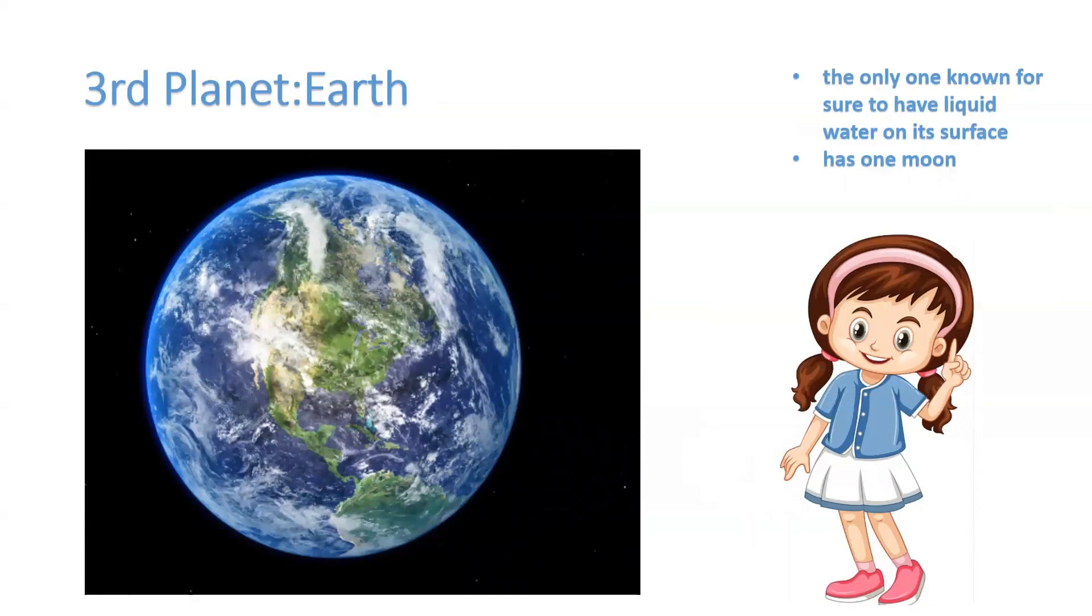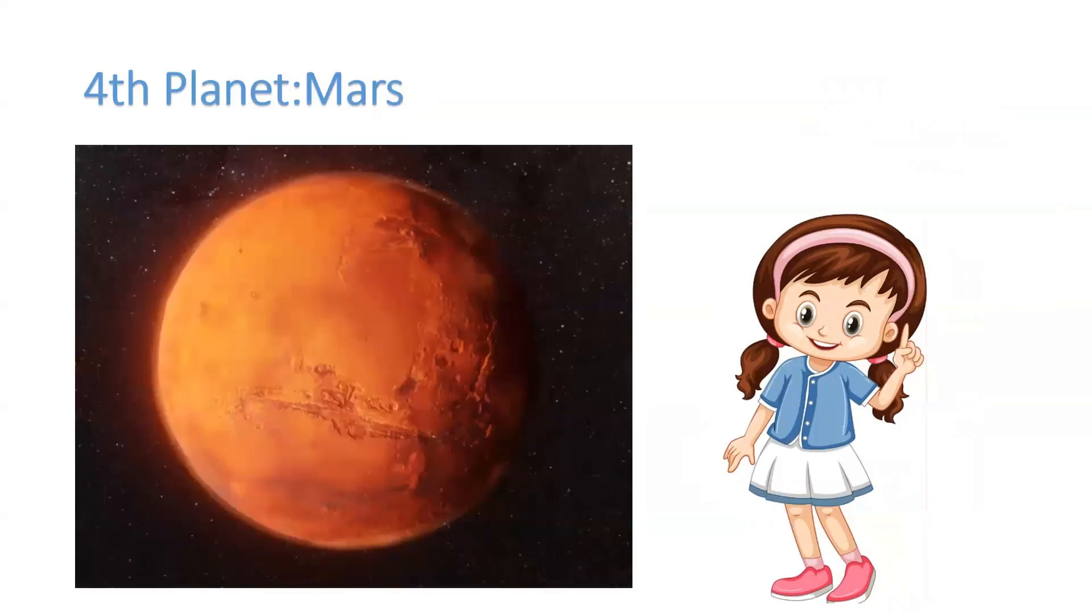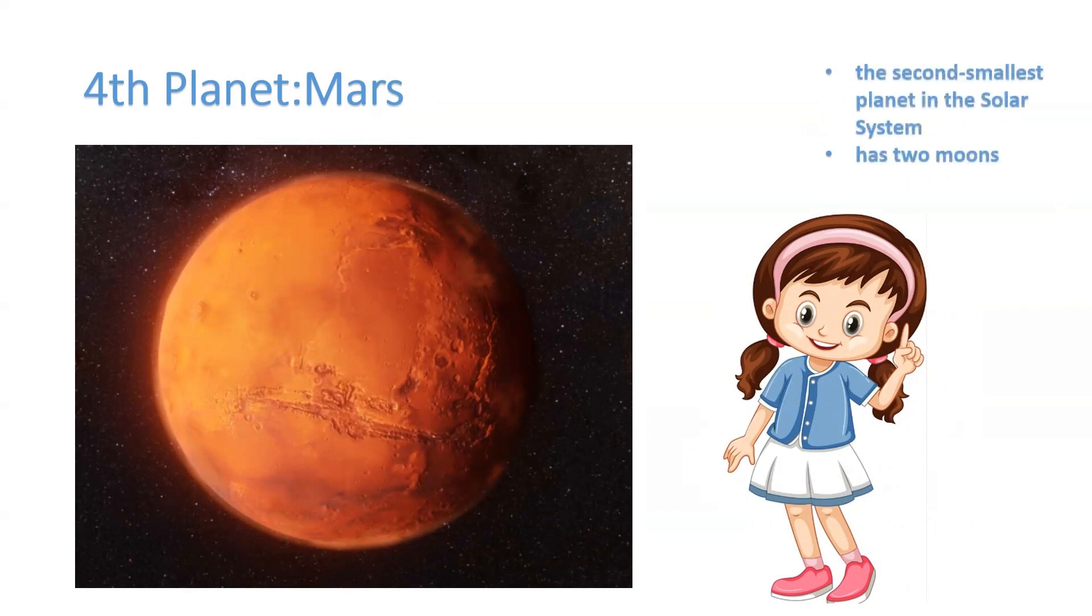Let's move to the next planet, planet Mars. Here's a picture of Mars. Mars is also known as the red planet. Did you know the second smallest planet in our solar system is Mars? Mars has two moons.